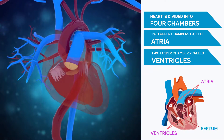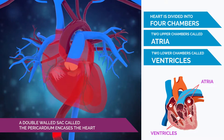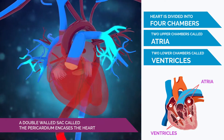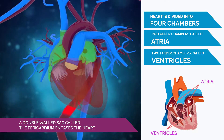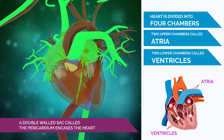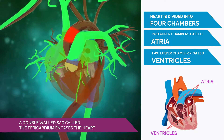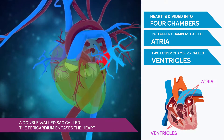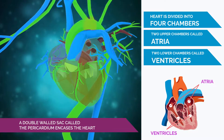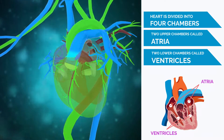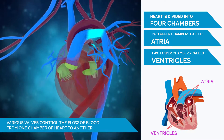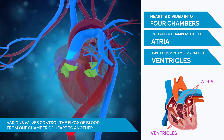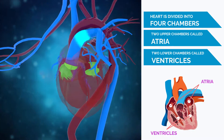A double-walled sac called the pericardium encases the heart. The atria receive blood returning from your body through the veins, and the ventricles pump blood to your body through arteries. Various valves control the flow of blood from one chamber of the heart to another.